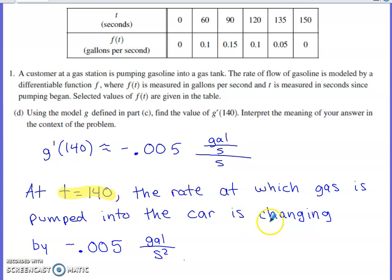So if you use the word decreasing here rather than just generically saying the rate at which it's changing is, make sure you don't include the negative at the end of your interpretation. But that should do it for 2023 AB, BC number one.